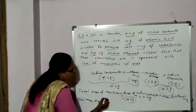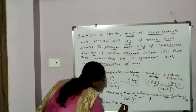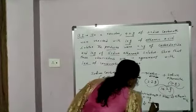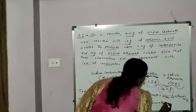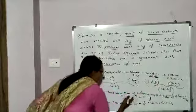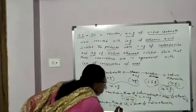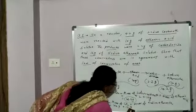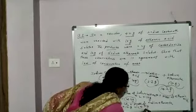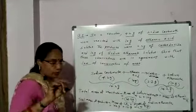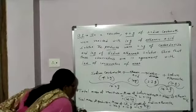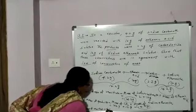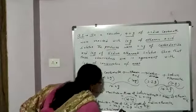Total mass of products equals mass of carbon dioxide plus mass of sodium ethanoate, which is 2.2 grams plus 12 grams, giving 14.2 grams. This is the mass of products. Therefore, total mass of reactants is equal to total mass of products.